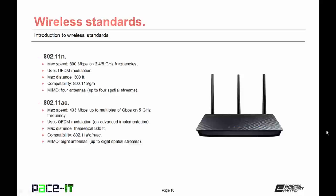And finally, we have 802.11ac. It offers speeds anywhere from up to 433 Mbps up to multiples of Gbps, and it operates on the 5 GHz frequency band. It uses OFDM as its method of modulation, but its implementation is an advanced form of OFDM. 802.11ac offers a theoretical maximum distance of 300 feet and can be compatible with 802.11a, G, or N. When 802.11ac was introduced, they improved the MIMO technology, which now allows for up to 8 antennas, meaning there can be up to 8 separate spatial streams of data.